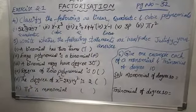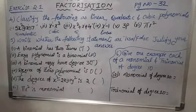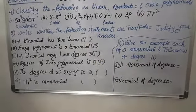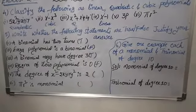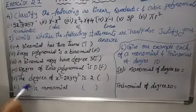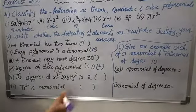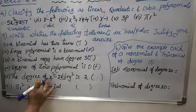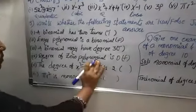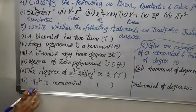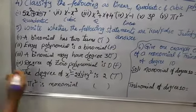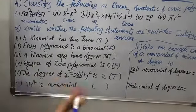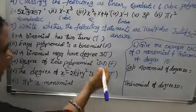Fourth: the degree of the zero polynomial is 0 — this is false. Fifth: the degree of x² − 2xy + y² is 2 — observe: the first term degree is 2, second term degree is 1+1=2, third term degree is 2, so the highest is 2 and the total degree of this polynomial is 2 — true. Last: π·r² is a monomial — there is no plus or minus symbol between terms, so it is a single term, hence a monomial — true.